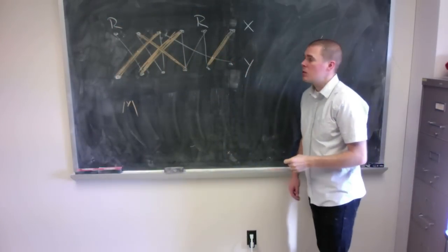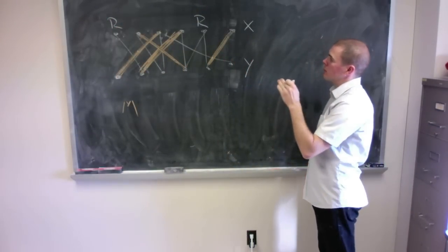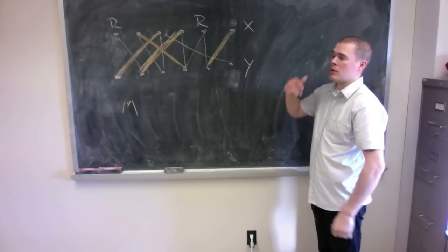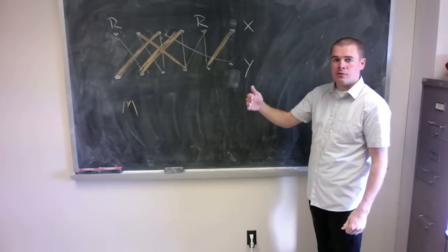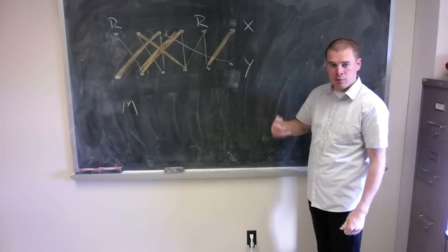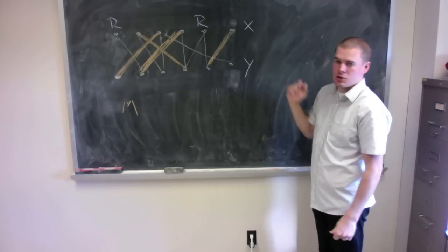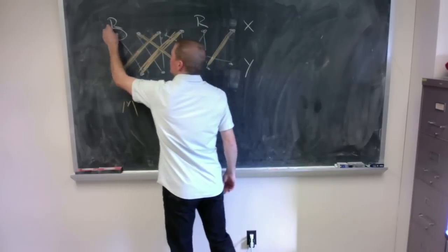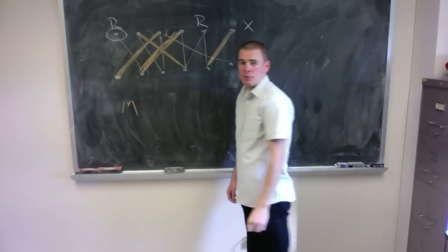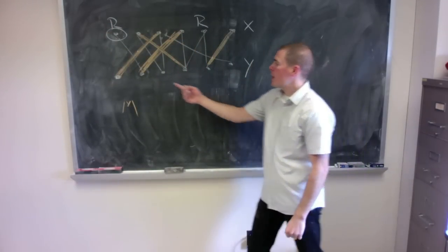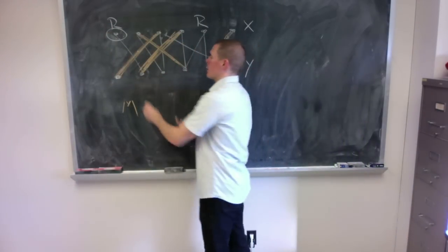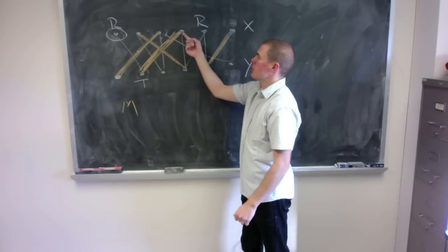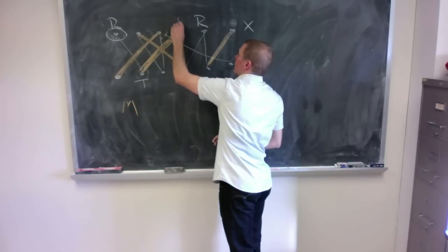I'm going to start with my unmatched vertices of X in my set R. I'll find an unmarked vertex in R and perform my search around its neighbors. Here is this vertex — I'm going to mark it, look at its neighbor, put it into T, and because it's matched, I'm going to look across and put that vertex into R.